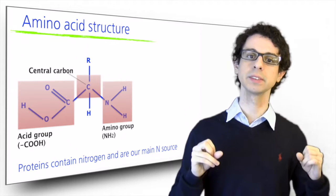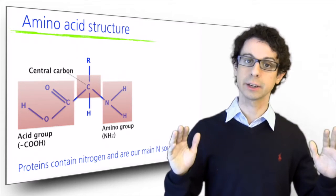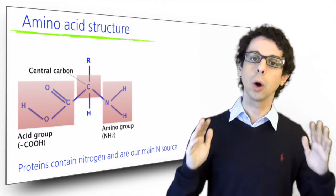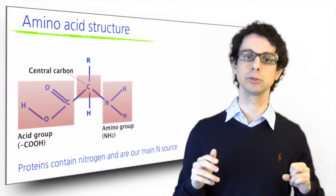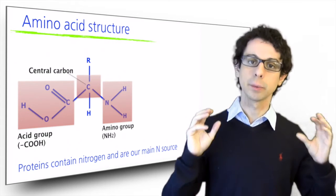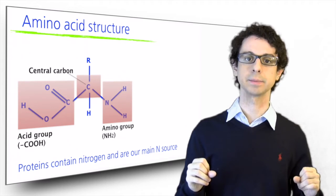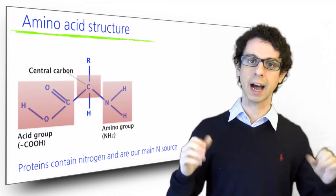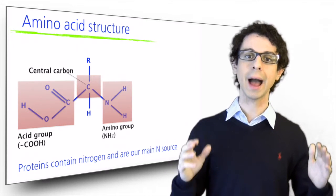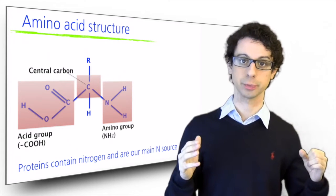If you think of carbs and lipids, there was no nitrogen in their structures. Proteins are the only macronutrients that contain nitrogen, and are our main source of this element. So on top of carbon, hydrogen, and oxygen, amino acids also contain atoms of nitrogen.